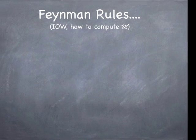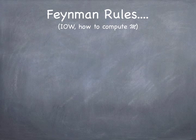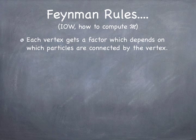Moving ahead — how do we calculate that script M? I want to do a little overview first and then get into the nitty-gritty. If you make a diagram describing the process whose cross-section or decay rate you want to compute, each vertex gets a factor that depends on the particles connected. For example, if you have a photon emitted by a charged particle, there's a vertex factor describing the amplitude of that process. In the case of a particle emitting or absorbing a photon, it's going to be proportional to the charge.